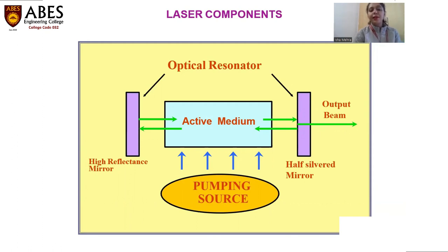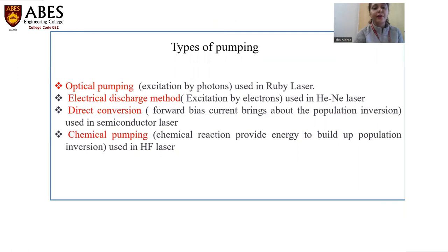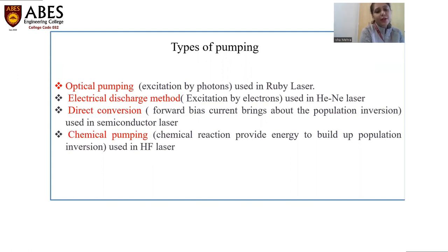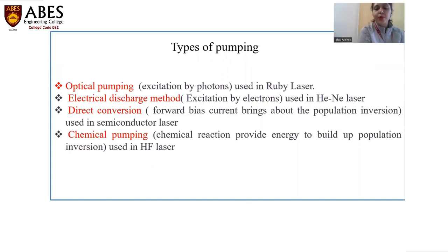The types of pumping involved are: optical pumping, where atoms are excited through photons; electrical discharge method, where electrons are used; direct conversion, which uses forward bias current to achieve population inversion and is generally used in semiconductor lasers; and chemical pumping, which uses certain exothermic reactions so that atoms can be raised to a higher energy level.